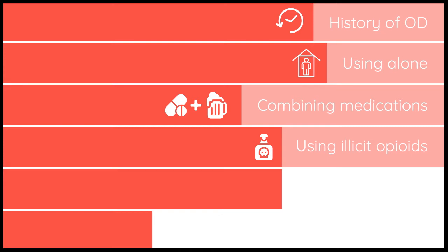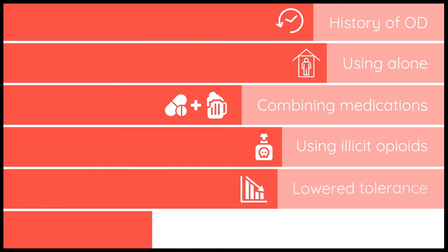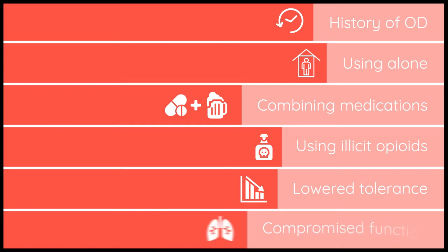Additional risk factors include having a lowered tolerance, such as when a person has been abstinent during active treatment for opioid use disorder or after incarceration, and the effects of compromised respiratory, renal, and hepatic function.